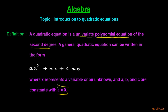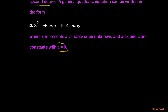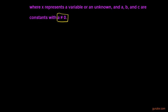Where a is not equal to zero. What will happen if a equals zero? Suppose if we put zero there, then that term will be zero and the equation will become a linear equation in one variable. So the coefficient of x² cannot be equal to zero.